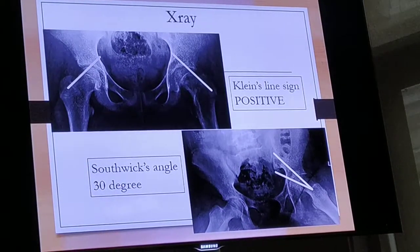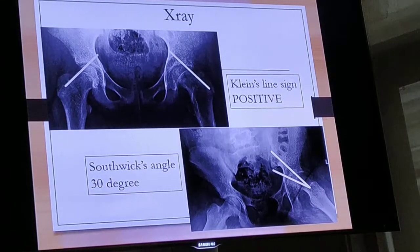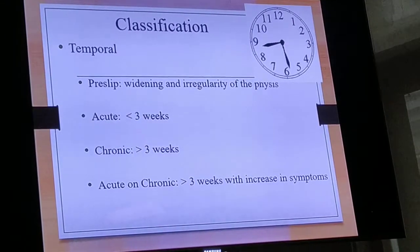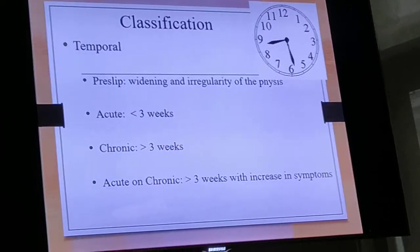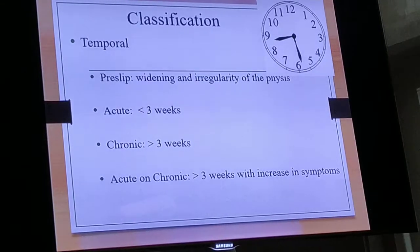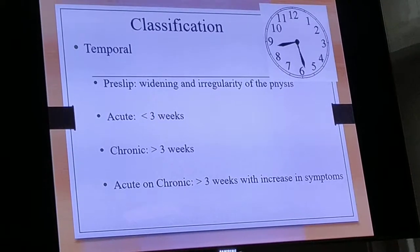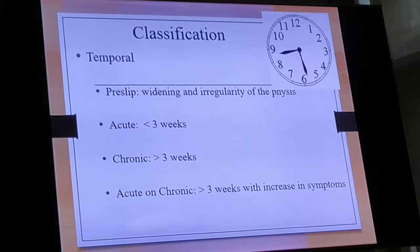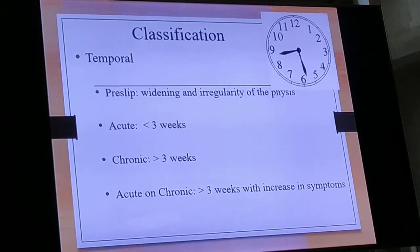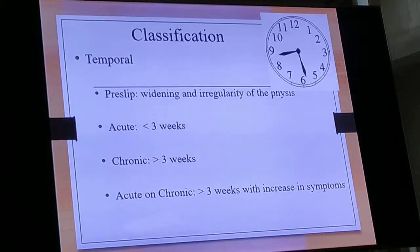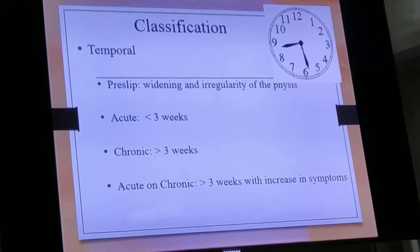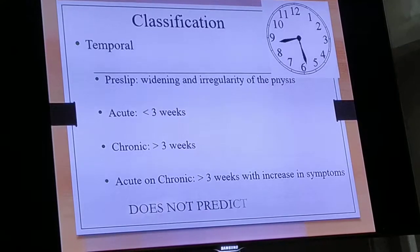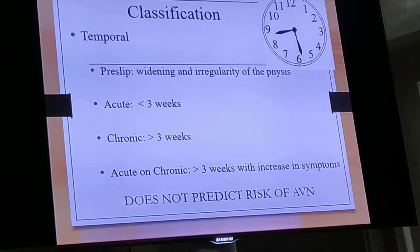How do you classify a child with SCFE? There are three classifications. The first is a temporal classification: pre-slip, where there is just widening and irregularity of the physis; acute slip, which is less than 3 weeks; chronic slip, where symptoms are more than 3 weeks; and the commonest scenario — acute on chronic slip — where the child has symptoms for more than 3 weeks, has a sudden fall, trips, and then presents with an acute episode. This classification does not predict the risk of AVN.